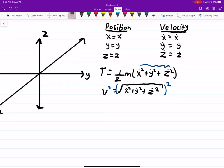And your potential energy, U, is just going to be M G times your height, which is Z, since Z is our vertical. So we have our kinetic energy and our potential energy.